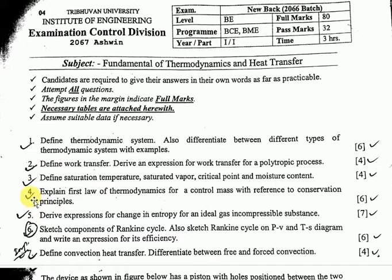Question number five from Chapter 4: derive the expression for change in entropy for an ideal gas — this was about a seven-mark question.